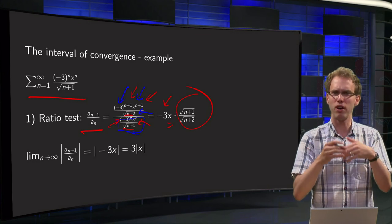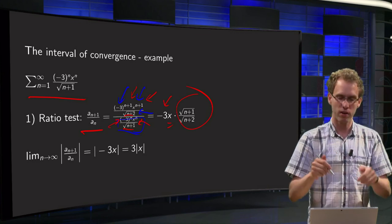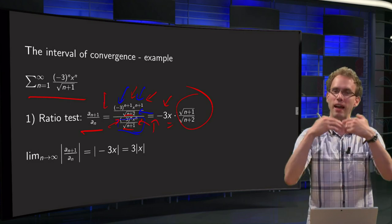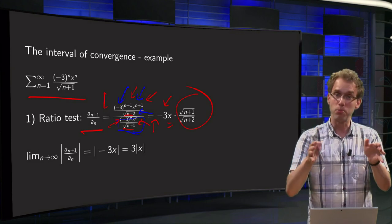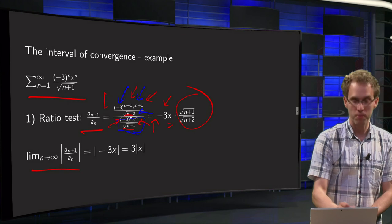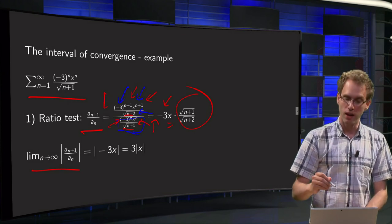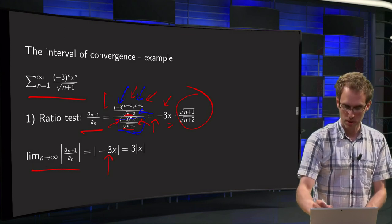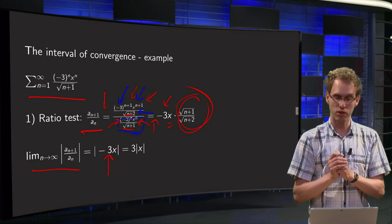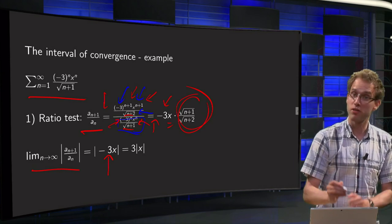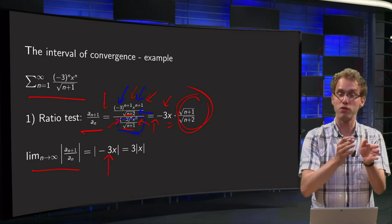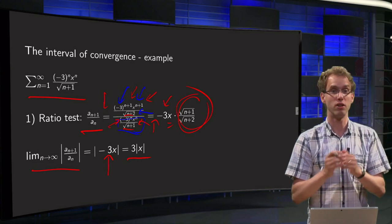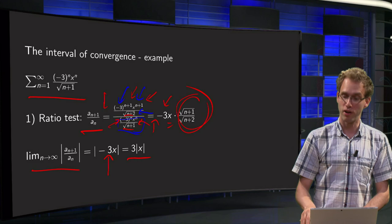In these first steps there are no absolute values or limits yet. First take a_{n+1} over a_n, simplify, and then after simplification put in the absolute values and take the limit. Now we take the limit of the absolute value of this expression, and we see the absolute value of minus 3x is left, because the limit of square root of n+1 over square root of n+2 equals 1.